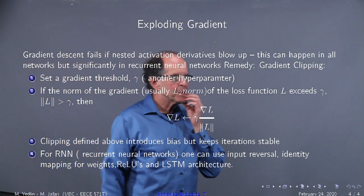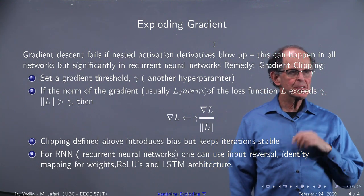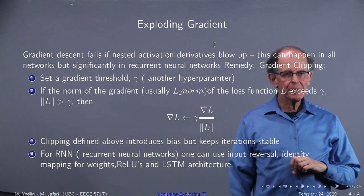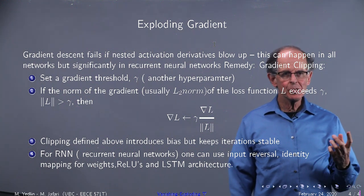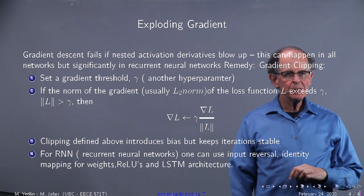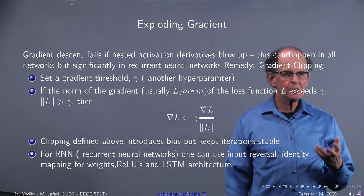Opposite problem: exploding gradient. And this is how we fix it. We use gradient clipping. So you have a check. If grad goes crazy and goes to not a number, you bring it back down to behave itself. So you set a gradient threshold, gamma, another hyperparameter.